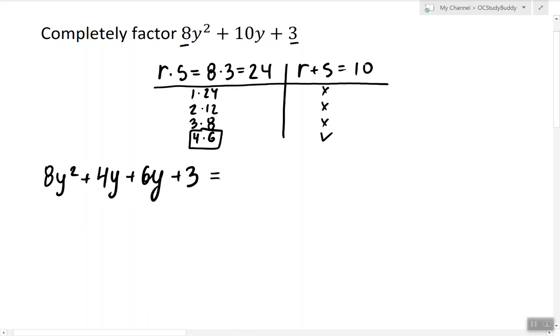And now we're going to group the terms. So what do these two have in common? 4y. So 2y plus 1 is left. What these two have in common is 3. Factor it out. So again 2y plus 1 is left.